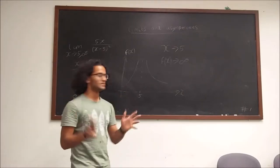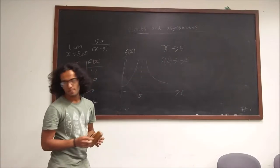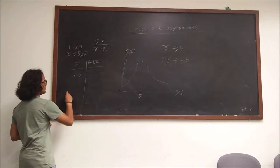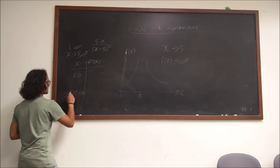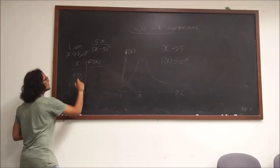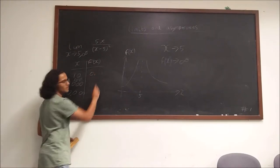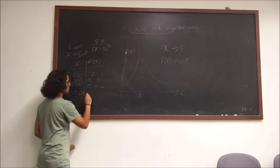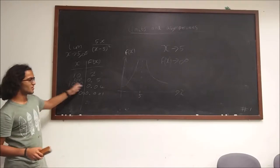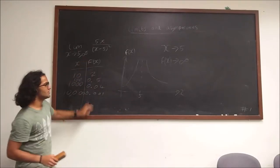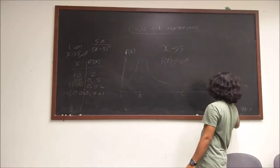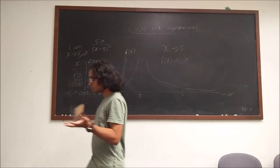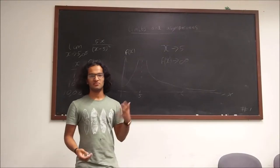Now let's take the example as x tends to infinity. We'll make another table with values 10, 100, 1000, 10000, and in this case we get approximately 0.5, 0.04, 0.001, 0.2. We see that the trend as x tends to infinity is that f of x tends to decrease, getting very very close to 0 but never quite reaching it. So we could say that as x tends to infinity, f of x tends to 0.